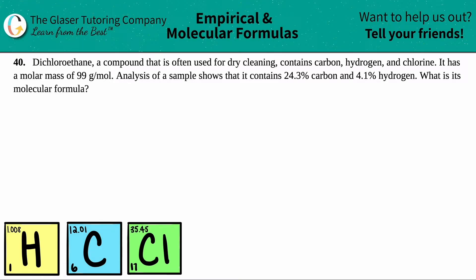Number 40. Dichloroethane, a compound that is often used for dry cleaning, contains carbon, hydrogen, and chlorine. It has a molar mass of 99 grams per mole. Analysis of a sample shows that it contains 24.3% carbon and 4.1% hydrogen. What is its molecular formula?